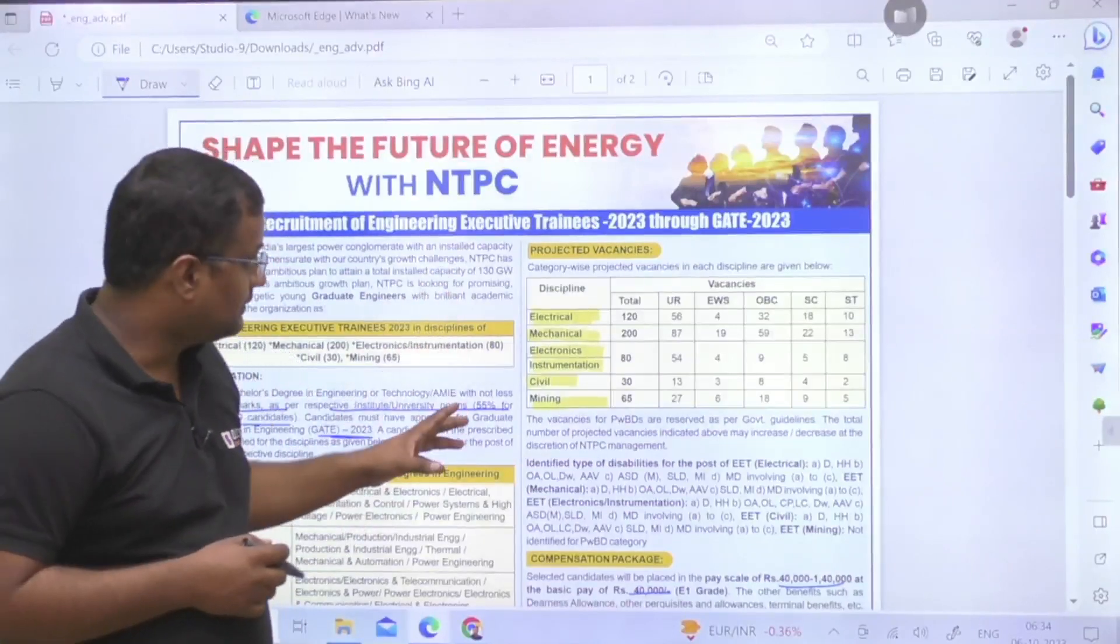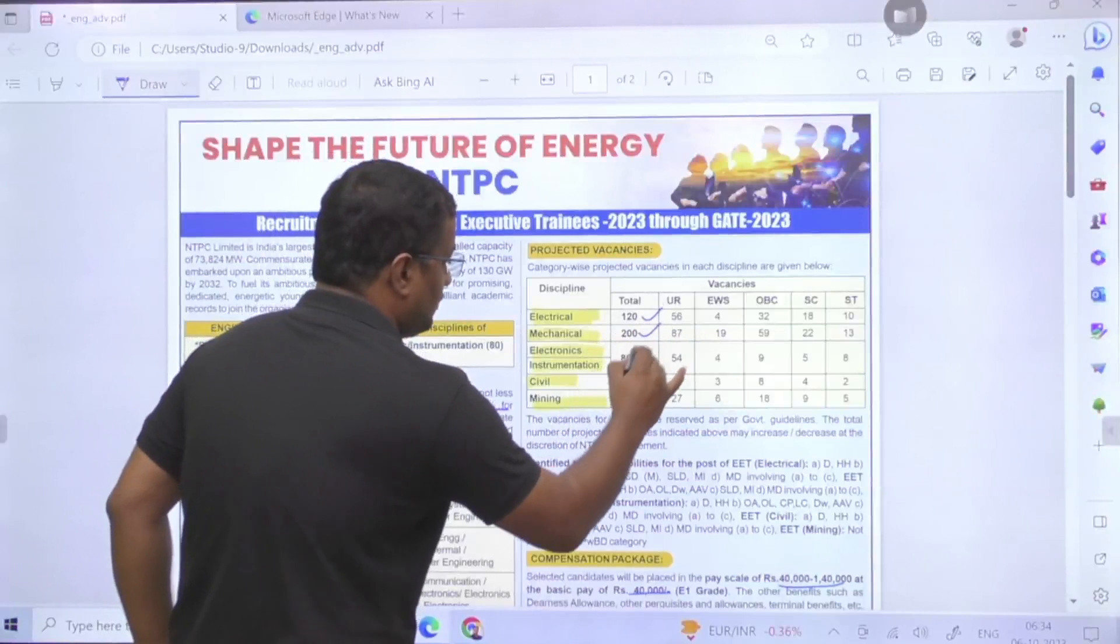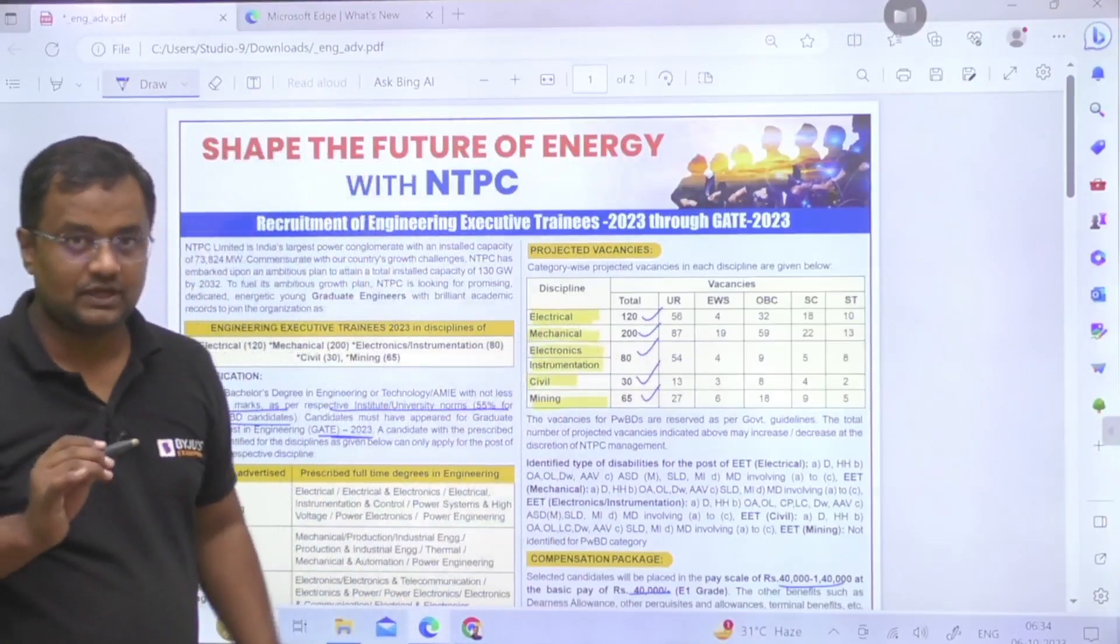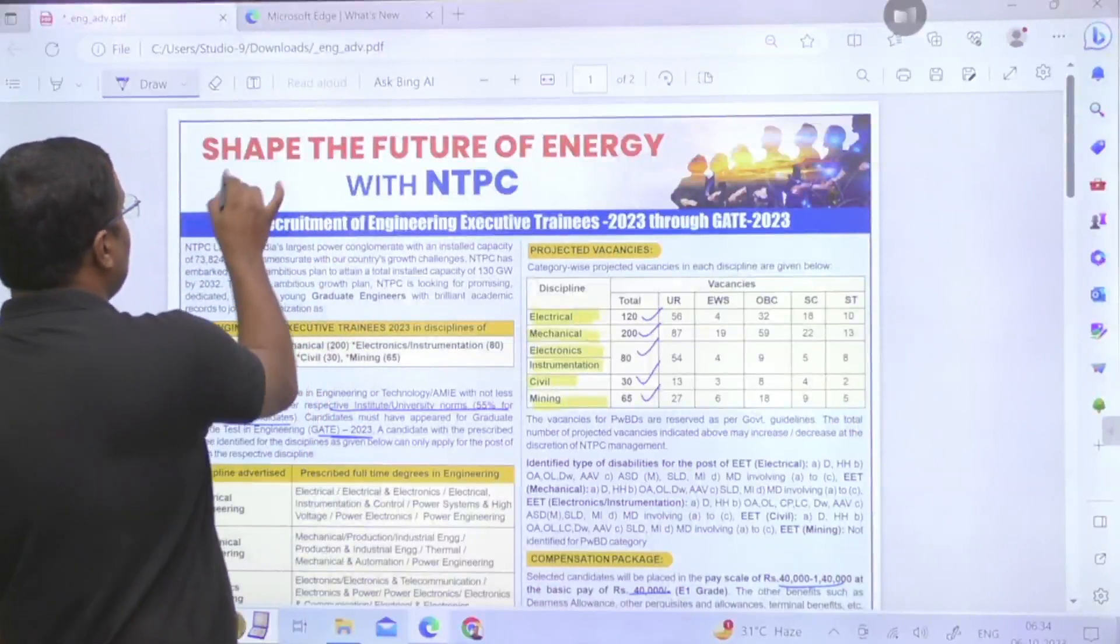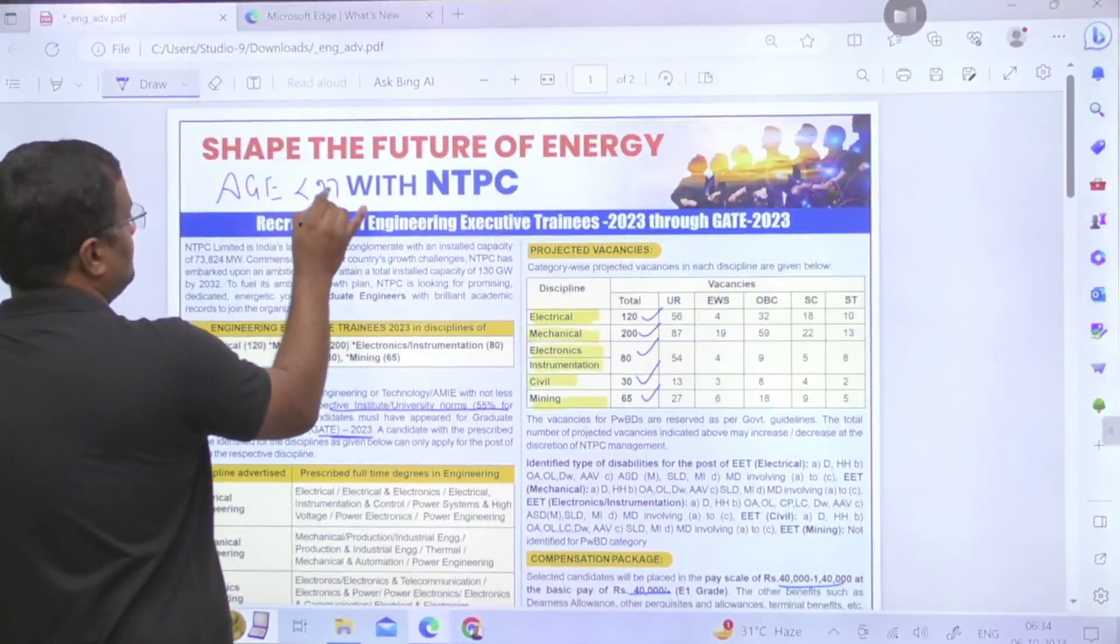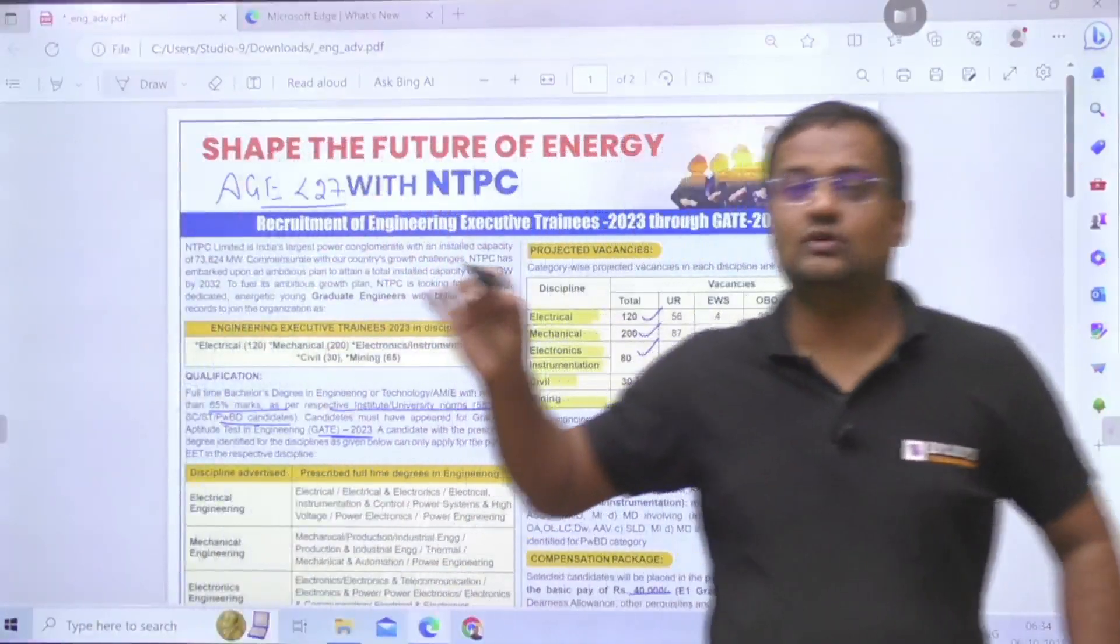Then you can fill this form. For Electrical it is 120 seats, for Mechanical 200, for Electronics 80, for Civil 30, for Mining 65 seats. Your age should be less than 27 years. You have given the GATE examination, you are qualified.